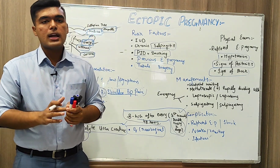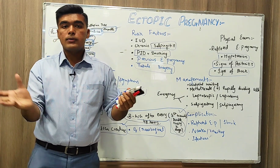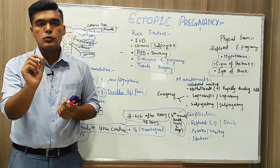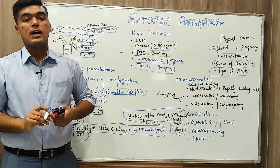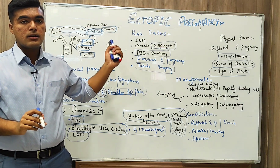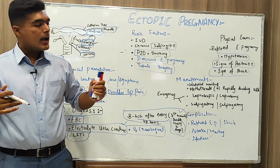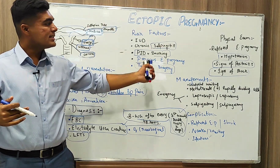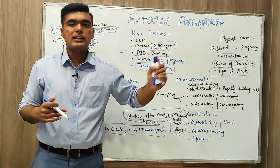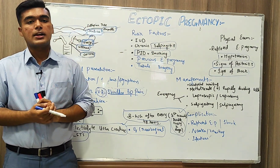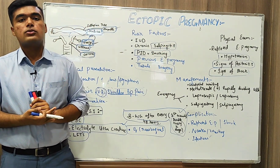In a quick overview of what we have discussed so far: we covered what ectopic pregnancy is, the relevant structural anatomy, how it occurs, the signs and symptoms, physical signs, and how we can differentially diagnose it.